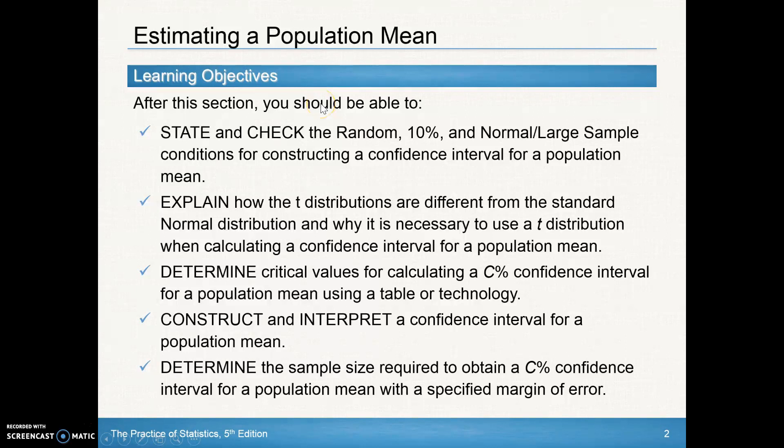After the section we should be able to state and check for randomness. Just like the last section, we're looking to see that we sampled from an SRS. We're looking to satisfy the 10% condition, establishing independence through that 10 times the sample size is less than or equal to our population. And then we're going to establish normality through our large sample condition. If the population distribution is known to be normal, our sampling distribution will be normal. If we do not know what the population distribution looks like, we're hoping that we have a large enough sample, a sample size that's greater than or equal to 30, so we can use the central limit theorem.